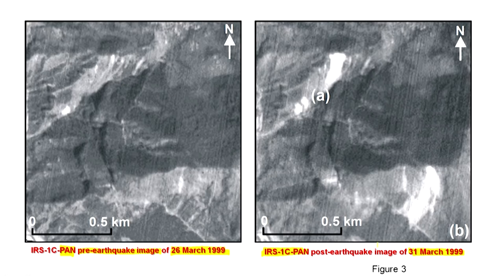Though the repeat cycle of IRS 1C is not exactly 5 days, that sensor had the capability of steering — meaning from the ground, after sending signals, the sensor can be tilted toward a particular direction. This is what was done after the 29th March earthquake: a neighboring orbit's satellite was tilted a little bit toward the same area. So we ended up with just 5 days time difference between the two images — one pre-earthquake and one post-earthquake.